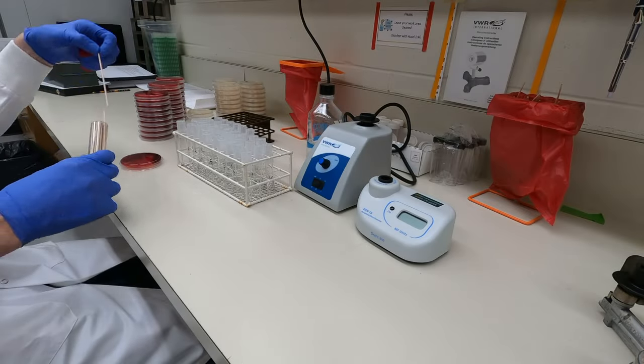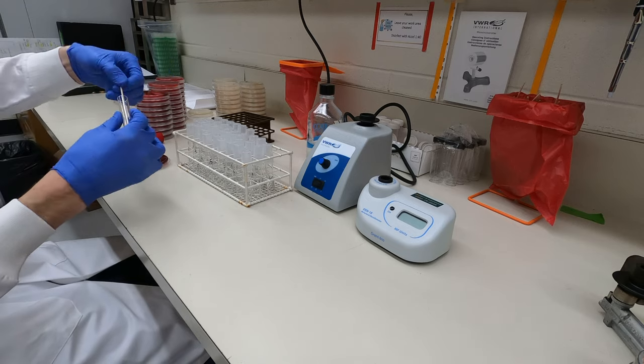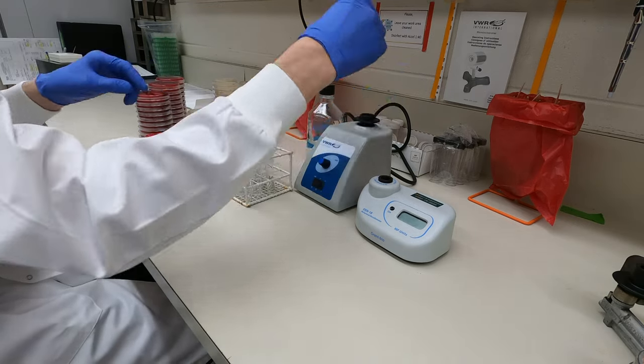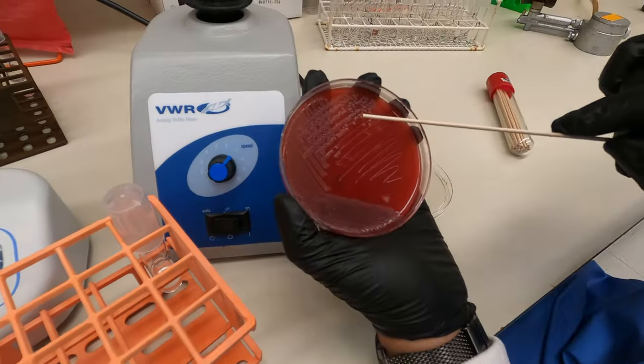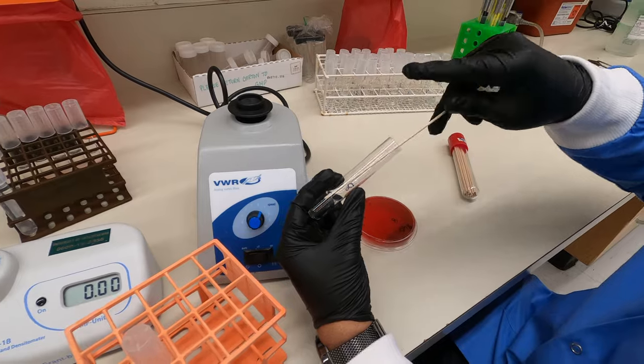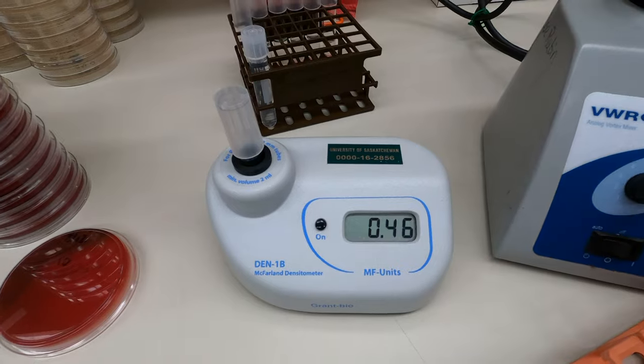Now that we have our media, we're ready to test our isolates. As with all susceptibility testing, we start by making a McFarlane 0.5 suspension of our organisms. As an additional quality control step, I make up this suspension using isolated colonies from the fourth streak on our plates. That helps me to be confident that I'm working with a pure culture.